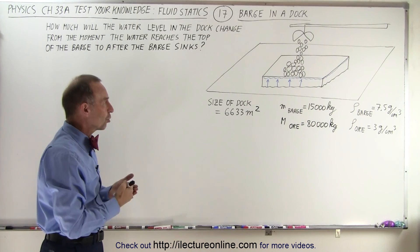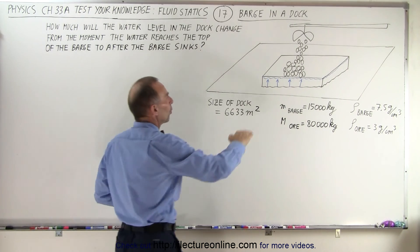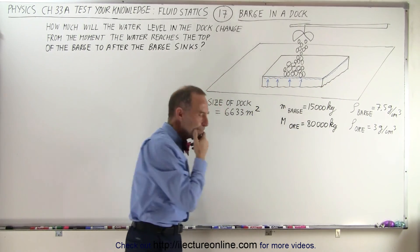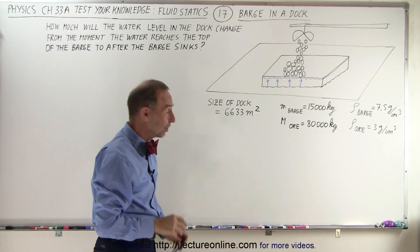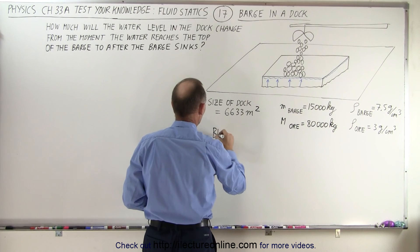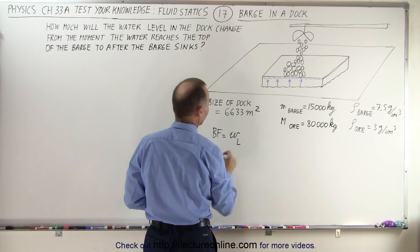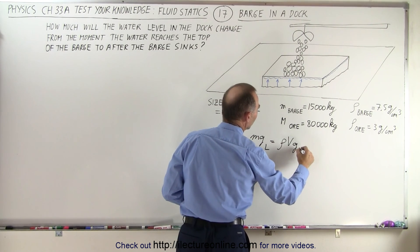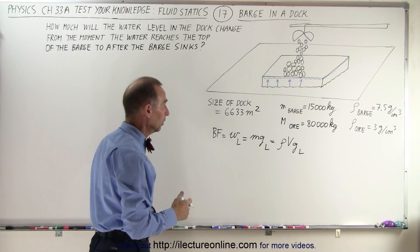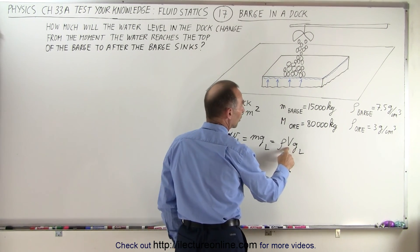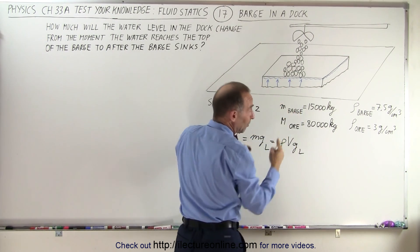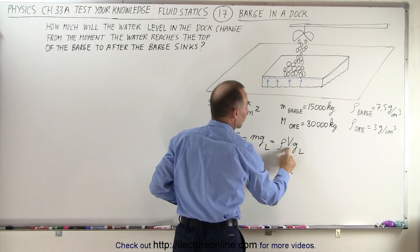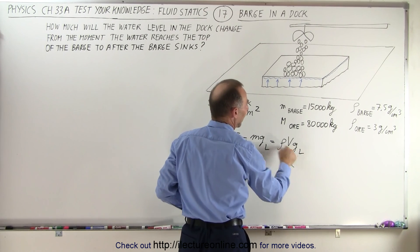We start by determining how much water the barge displaces when it is completely submerged to the very top. The buoyancy force equals the weight of the displaced liquid, which equals rho times V times g of the displaced liquid — in this case, water. So it's the volume of the barge as it pushes down into the water, totally displacing the water. The density of the water times g.